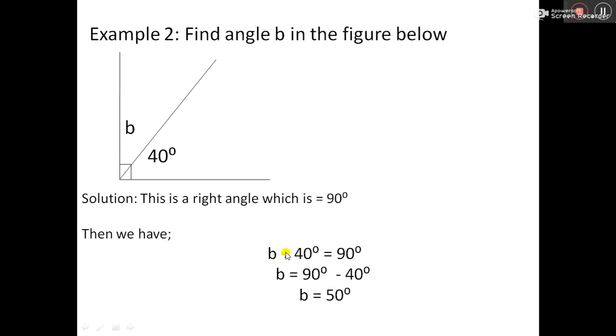So we have b plus 40, which sums up to 90. So we take this over to the other part, and the positive sign changes to a negative sign, and then we get 50 degrees.